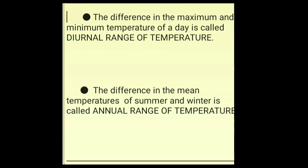Now, let us see what these two terms mean. The difference in the maximum and minimum temperature of a day in a particular place is called the diurnal range of temperature. For example, if the minimum temperature was 24 degrees Celsius and maximum temperature was 29 degrees Celsius, the difference between these two is the diurnal range of temperature. But in Nagpur, where the temperature during daytime might be as high as 40 degrees and at night maybe 22 degrees, 40 minus 22 equals 18 — that is a very huge difference. So diurnal range of temperature means the difference in the maximum and minimum temperature of a day at a particular place.